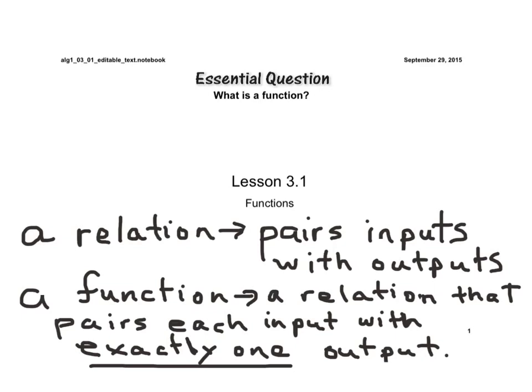Now, a function is a special type of relation that pairs each input with exactly one output. And as we go through some examples here, you'll understand these definitions more clearly.